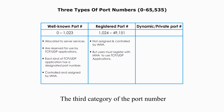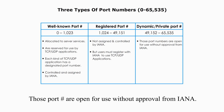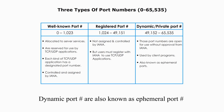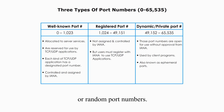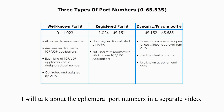The third category of port numbers is called dynamic or private port numbers. They range from 49,152 to 65,535. Those port numbers are open for use without approval from IANA — they are free to use. They are used by client programs, not servers. Dynamic port numbers are also known as ephemeral port numbers or random port numbers. They are short-lived, temporary, and arbitrary. I will talk about ephemeral port numbers in a separate video.